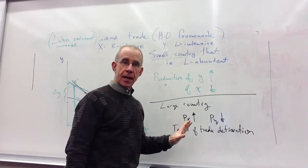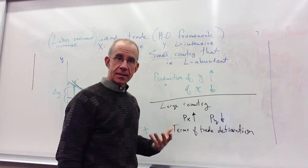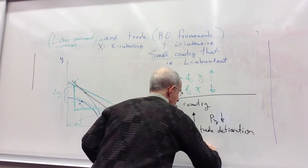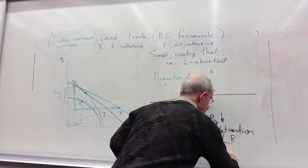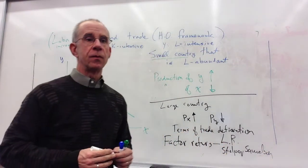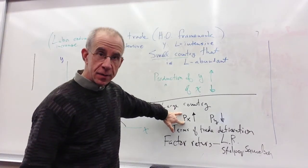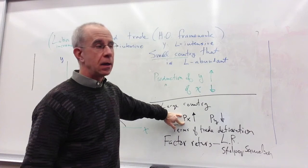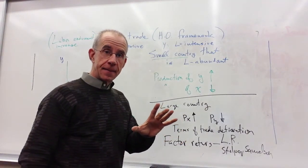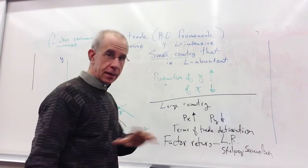So on your own, you should think about how this change in relative prices would affect factor returns inside this country according to the long-run Stolper-Samuelson result. Now I'm not going to go through this here other than to give you the bottom line effect. If the relative price of the labor-intensive good falls as a consequence of the expansion of trade, so if the relative price of Y falls, we've learned that the return to labor will fall in real terms and the return to capital will rise. That's the long-run result.